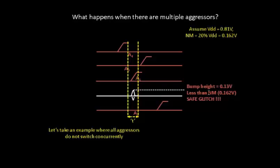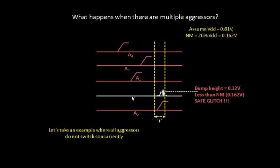The next is this final glitch. If you look into the bump height because of this particular aggressor, the bump height is 0.12 volts. This is again less than 20% of VDD, which is the noise margin of 0.162 volts, so this also falls into the category of safe glitch.